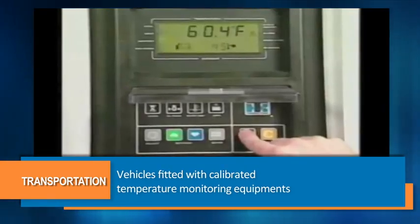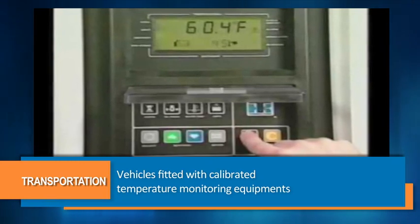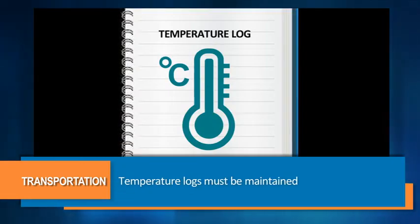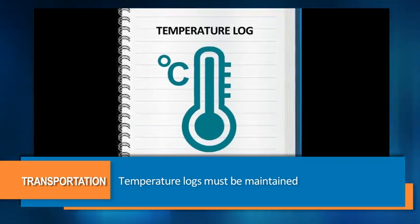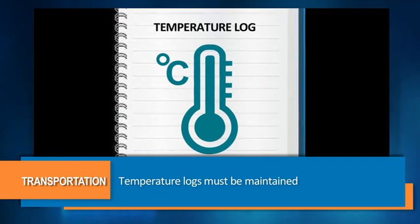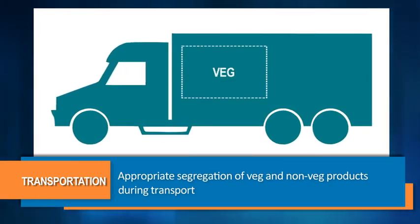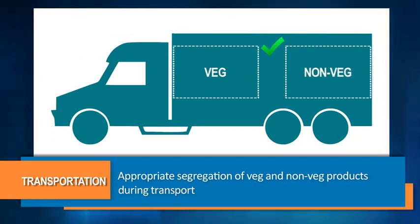Vehicles must be fitted with calibrated temperature monitoring equipment. Temperature logs must be maintained to ensure the product is delivered in the manner recommended. The appropriate segregation of vegetarian and non-vegetarian products during transport must also be ensured.